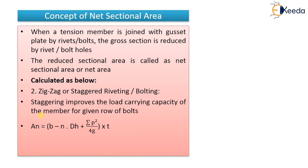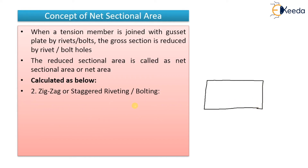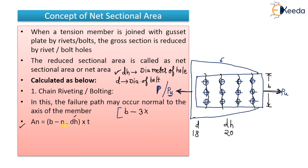These two formulas are for plates only. The second type of arrangement is the zigzag or staggered riveting. The formula B − N·DH × T is for chain bolting — for a plate connected with a gusset plate. If an angle is getting connected, I will explain that in the numerical directly, because without understanding net area you cannot solve the bigger problems.